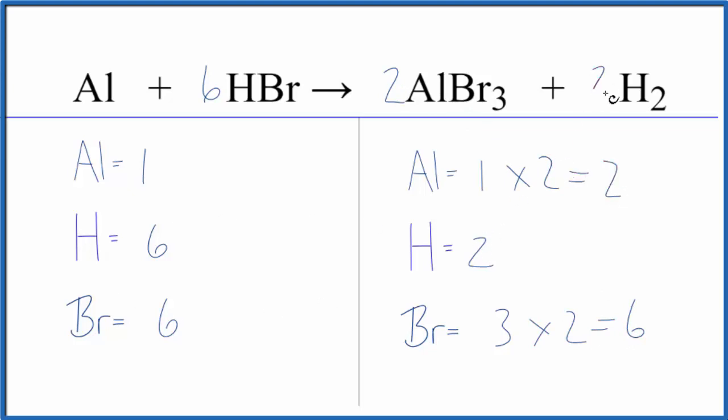For the hydrogens, we just need to put a three, two times three. That equals six. And then to fix our aluminums, aluminum is all by itself here. We just put a two, one times two. That balances the aluminum atoms, and we're done.